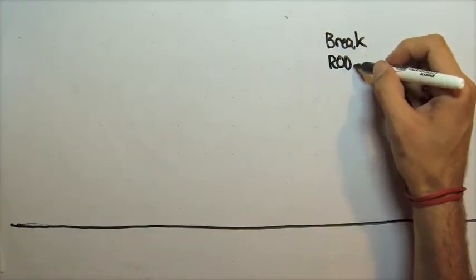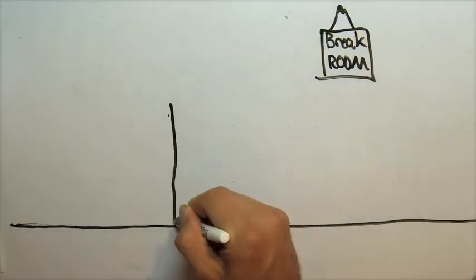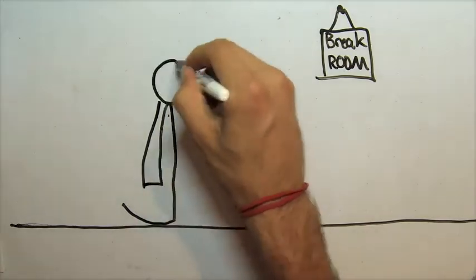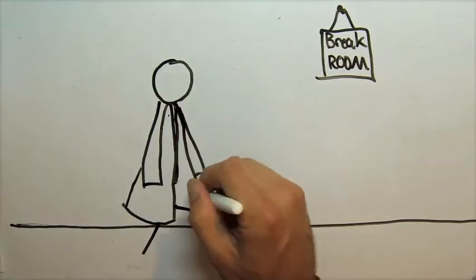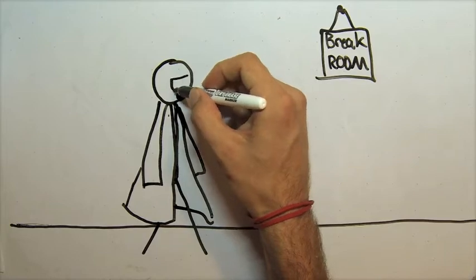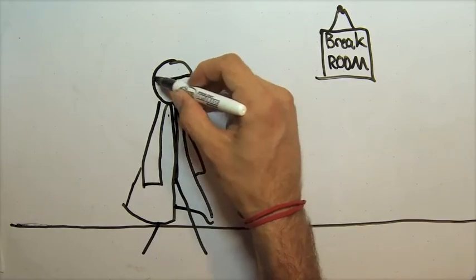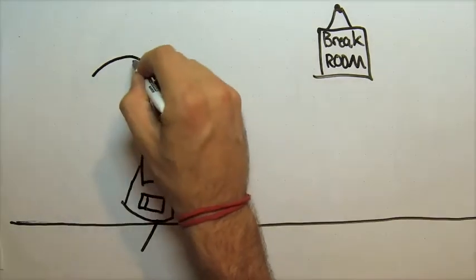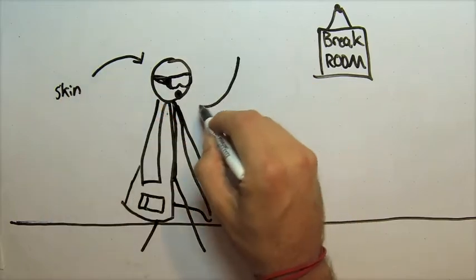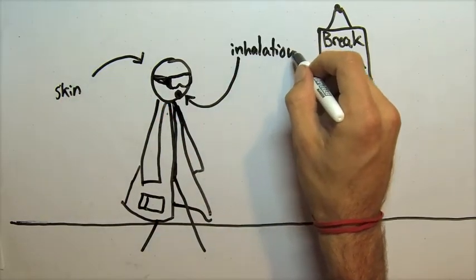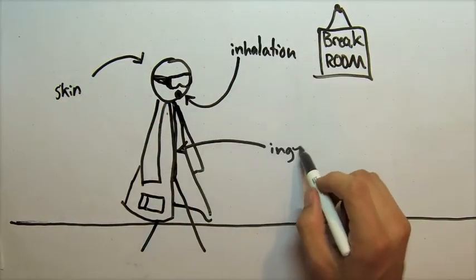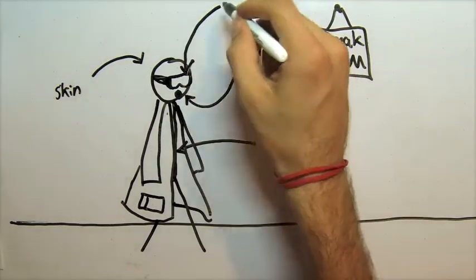When working in an environment with chemicals, it is important to be able to identify when and how you are exposed to these chemicals. There are four routes of exposure: skin, inhalation, ingestion, and eyes.